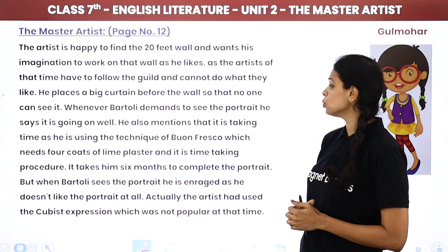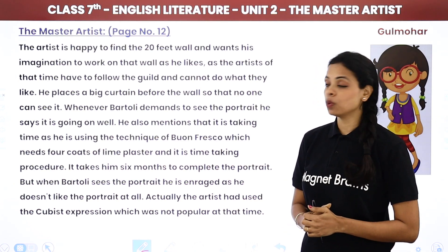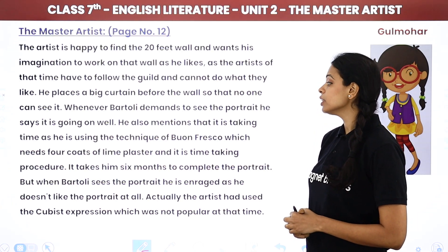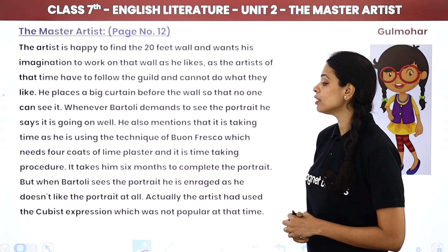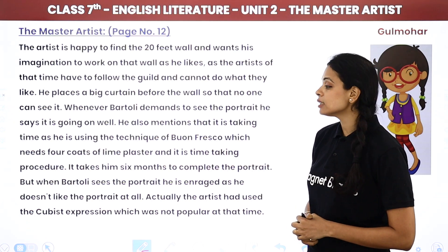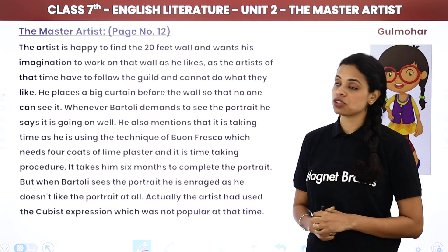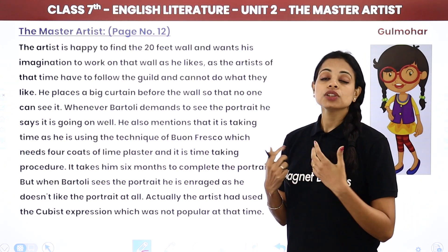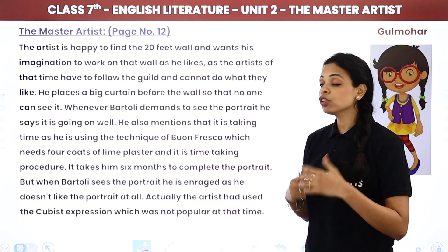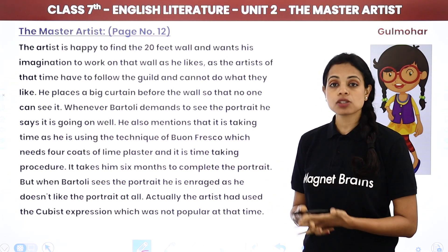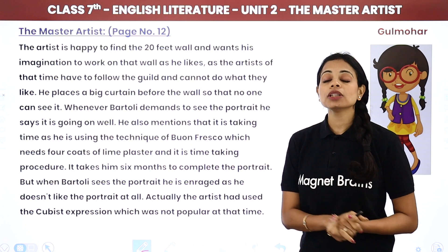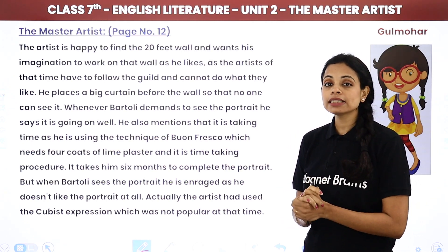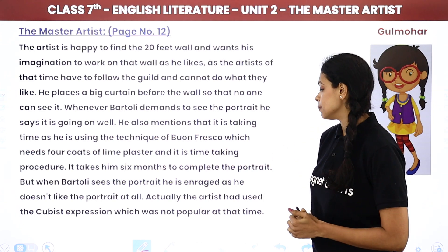He says the work is going on well. He also mentions that it is taking time because he is using the technique of Buon Fresco, which needs four coats of lime plaster and is a time-consuming procedure. When Bartoli asks how the painting is going on, Libai tells him that the painting is going well and explains that the Buon Fresco technique has four layers of lime plaster, making it last for life — but of course it is going to take time.